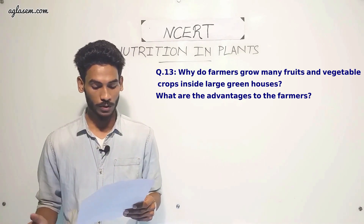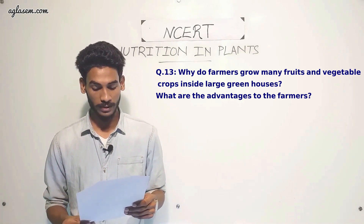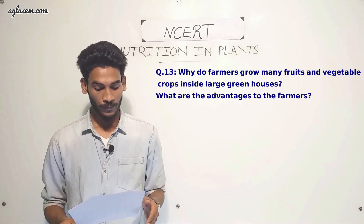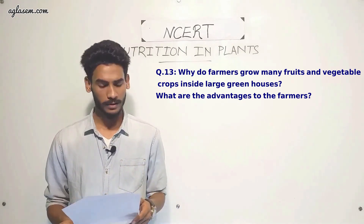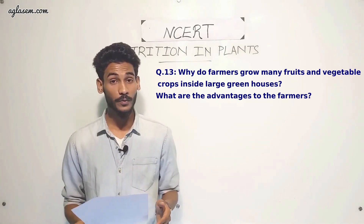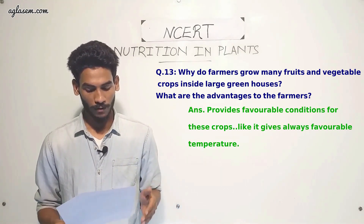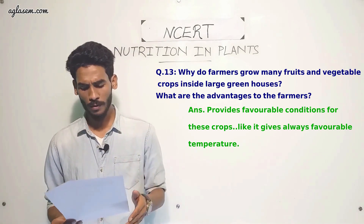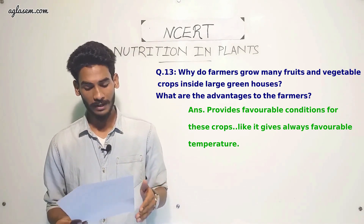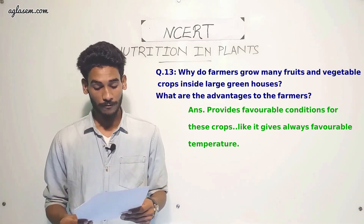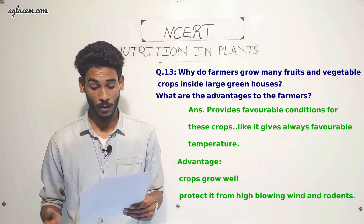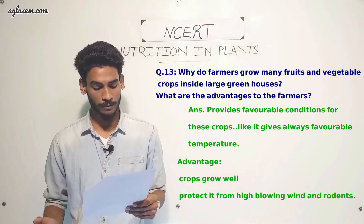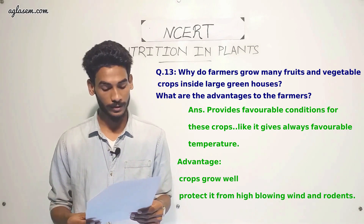Question 13: Why do farmers grow many fruit and vegetable crops inside large greenhouses? Greenhouses provide favorable conditions for crops, such as consistently favorable temperature. Farmers benefit because crops grow well and the greenhouse also protects them from high winds and rodents.